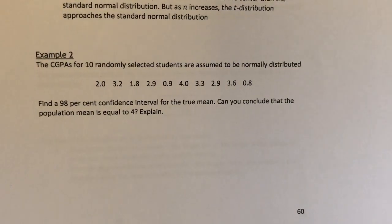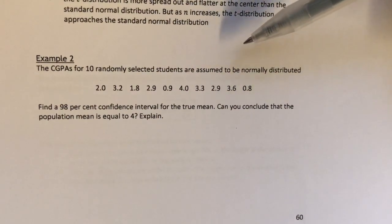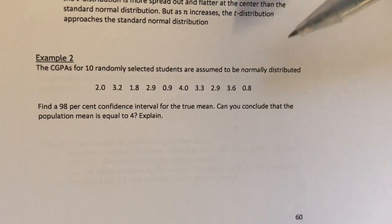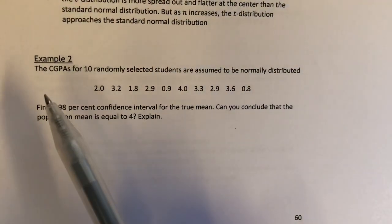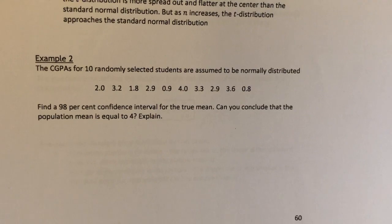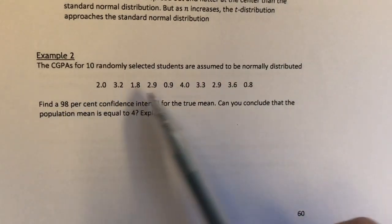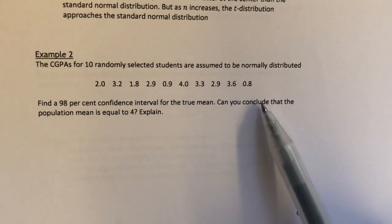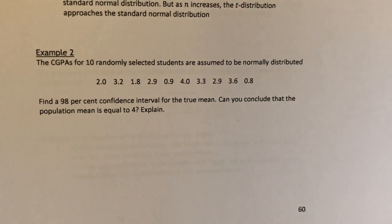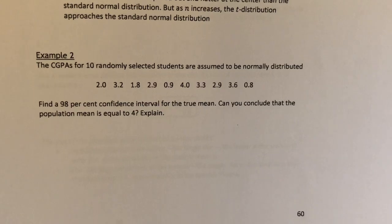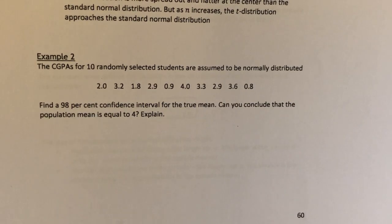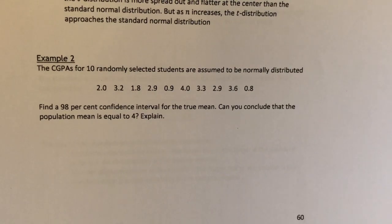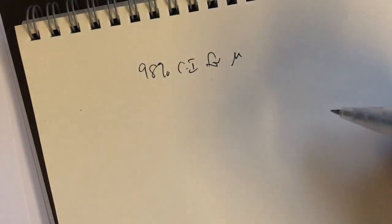Now let's move on to Example 2. This time, we're going to construct the confidence interval for mu, but for a small sample size. The CGPAs for 10 randomly selected students are assumed to be normally distributed — they give you a list of 10 CGPAs. The question is: find a 98% confidence interval for the true mean. Can you conclude that the population mean is equal to 4? First things first, we need to construct a confidence interval.